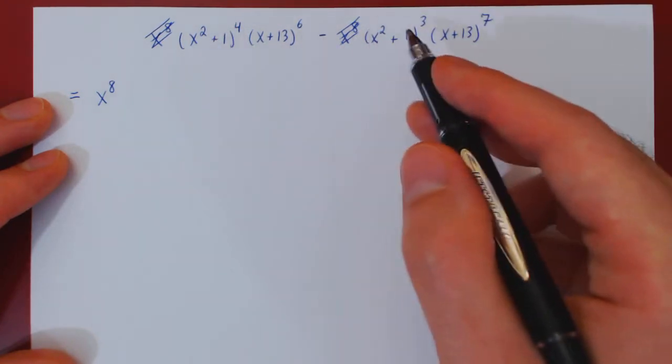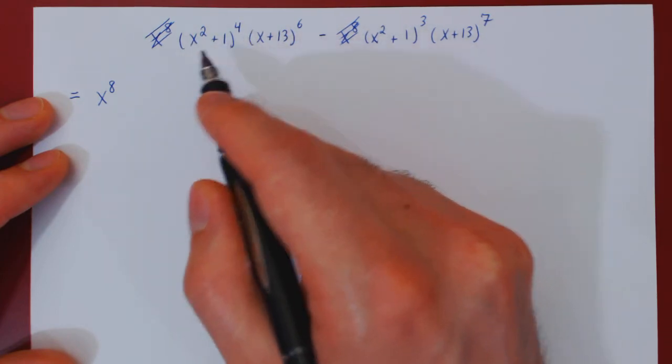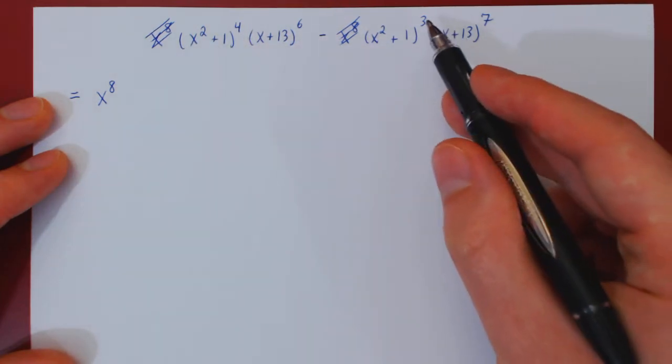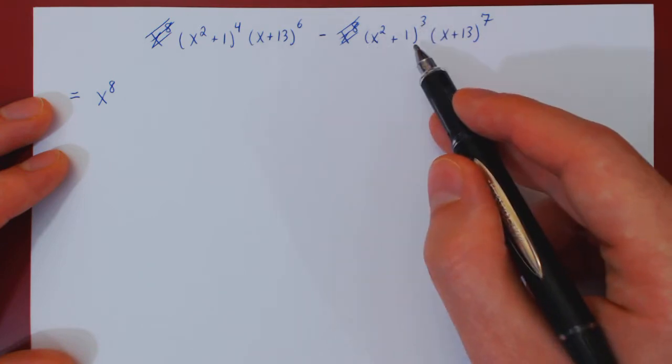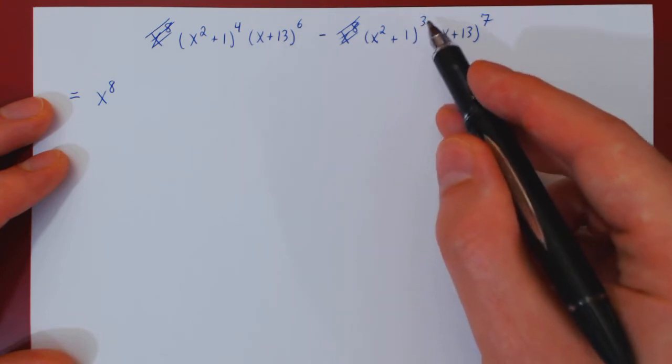Another common factor between the first and second term is x squared plus 1. There are 4 of those in the first case, and only 3 in the second case. So the best we can do is factor, from both terms, an x squared plus 1 cubed.